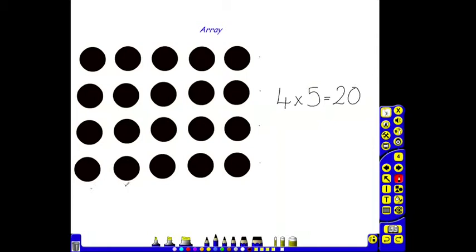We also have 1, 2, 3, 4, 5 columns of 4. So, 5 multiplied by 4 is also 20.